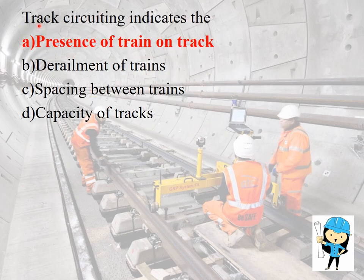Track circuiting indicates the presence or absence of a train on the track. It is also used to inform signalers and control the relevant signals.